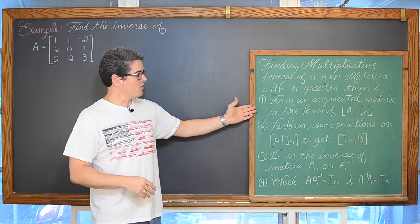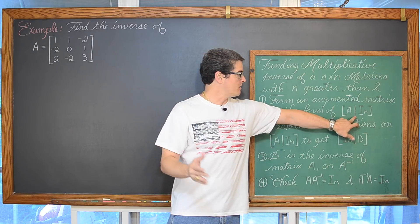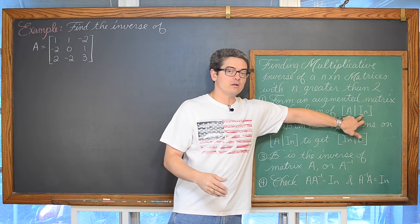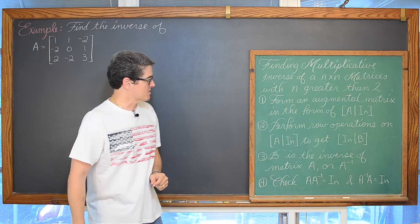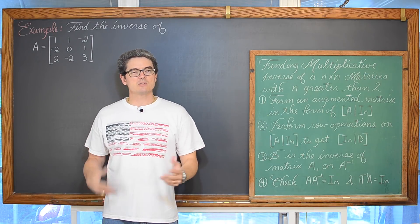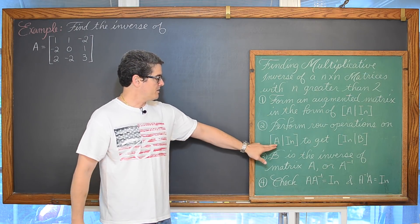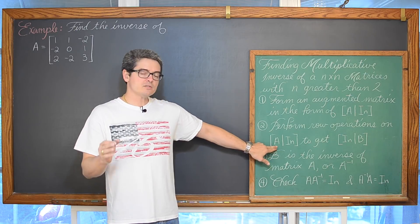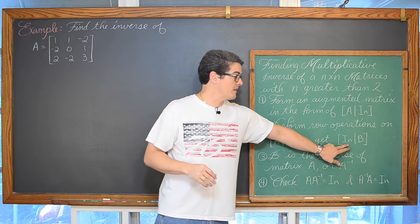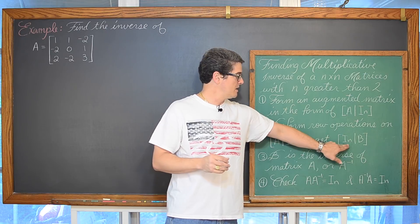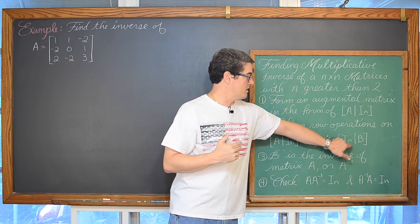So we are going to form an augmented matrix in the form of A, that augmented line, and on the right-hand side put the identity matrix. Then we are going to perform some row operations — some Gaussian elimination process — on this augmented matrix, because I want to make the left side of this augmented matrix the identity matrix, with that diagonal of 1's and everything else being 0's.